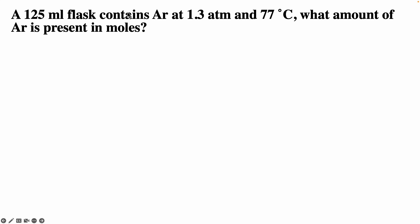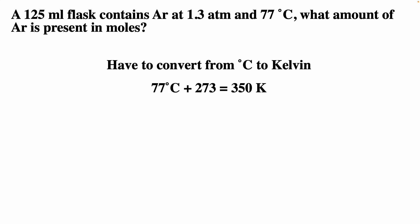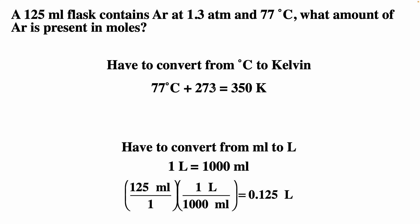A 125 milliliter flask contains argon at 1.3 atm and 70 degrees Celsius. What amount of argon is present in moles? We convert Celsius to Kelvin by adding 273: 70 + 273 gives 350 Kelvin, stopping at the ones unit for significant figures. We also convert 125 milliliters to liters: 125 divided by 1000 gives 0.125 liters.